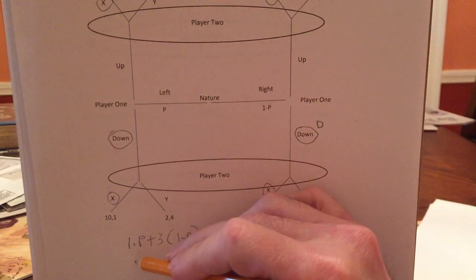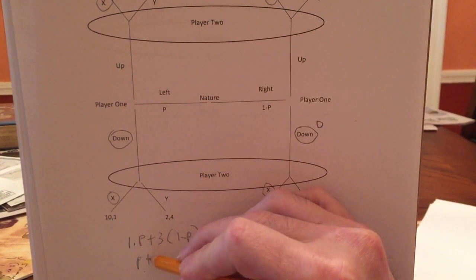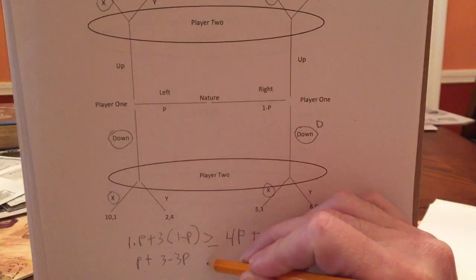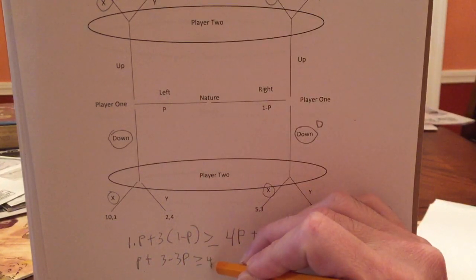So if we solve for this, we get P plus three minus three P is greater than equal to four P.